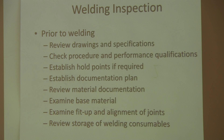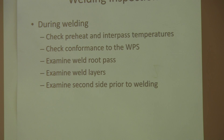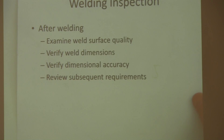A welding inspector needs to be involved in the entire process — prior to welding, during welding, and after. During welding, he needs to check what's going on: he needs to check the root pass, which is the first pass that's put in, and he needs to check the preheat and inter-pass temperatures, which are important for the metallurgy. After welding is when the actual visual inspection takes place — verifying the quality of the weld, checking for porosity, cracks, and checking dimensions.